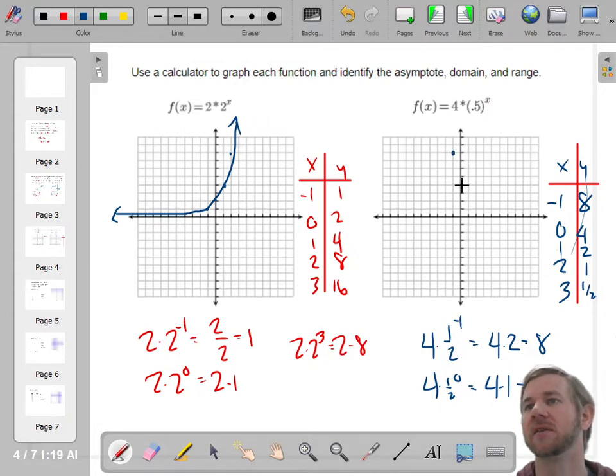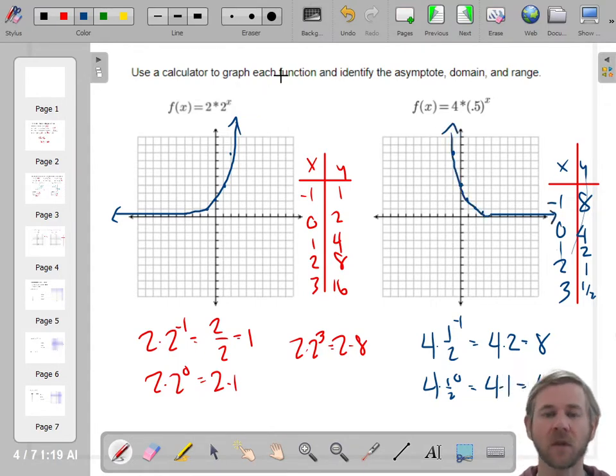So negative 1's at 8, 0's at 4, 1's at 2, 2's at 1, 3's at 1 half. Yep. So asymptote as well, but like that. So it goes like that. Pretty good. Okay.